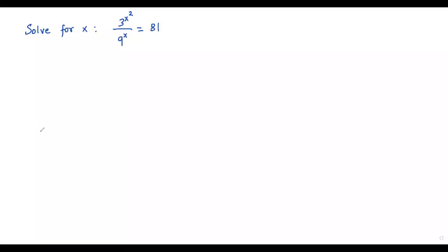Here we have an exponential equation. In the given exponential equation we have to solve for x, that is we have to find the value of x. Let me write the given exponential equation as it is: 3 to the power x squared over 9 to the x equals 81.